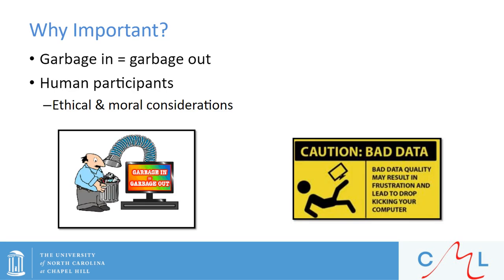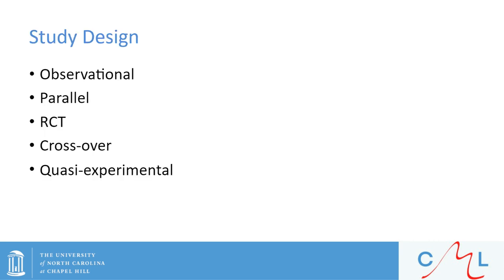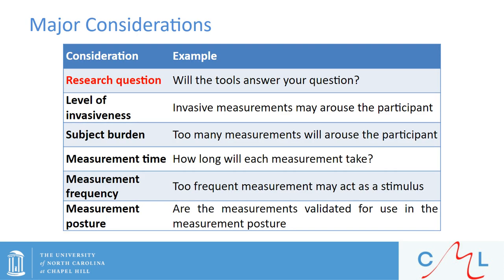To summarize the importance of internal validity: if we don't know the effect of A is really making a difference on outcome B, we don't have results that we can be confident in. Crap in equals crap out. With human participants, there are also ethical and moral considerations which we need to take into account as we prioritize internal validity. Next, we question the selection of the appropriate tool for a given study design. There are many types of designs: observational, parallel, randomized crossover trial, and quasi-experimental, among others.